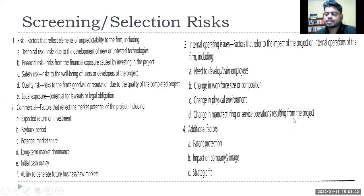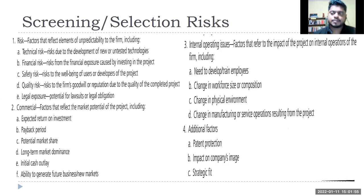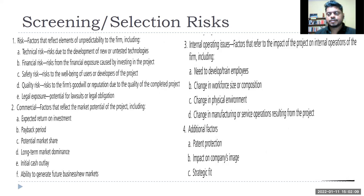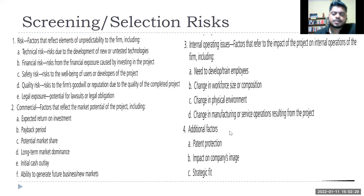Change in manufacturing or service operations resulting from the project: if you are introducing or improving a product, the plant manager needs to be informed from the beginning. It's not just about product development — at the end, the product needs to get into production and be regularly produced in that plant. If there's no assembly line or proper workforce, a manufacturing plant manager must be part of the project from the very beginning.